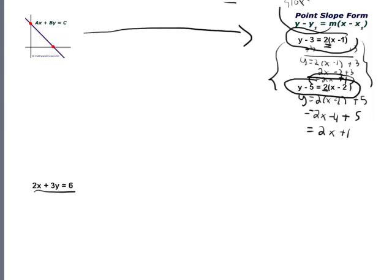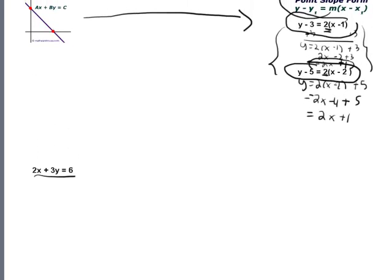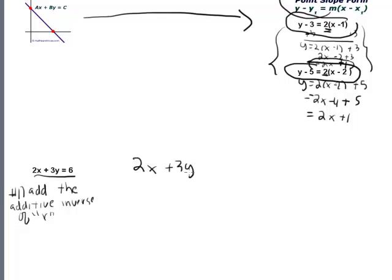That's going to come into play later in the process we're going to go through today to convert equations like this to point slope form. Let's look at what we might need to do. First, you may notice that the x's are on one side and the y's are on the other. Step number one: isolate the y term by adding the additive inverse of the x term to both sides. The additive inverse of 2x is negative 2x, so y is now isolated on the left side, giving us negative 2x plus 6.